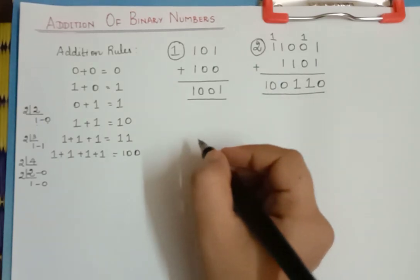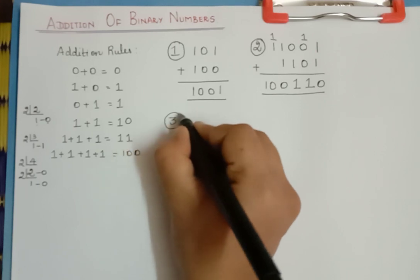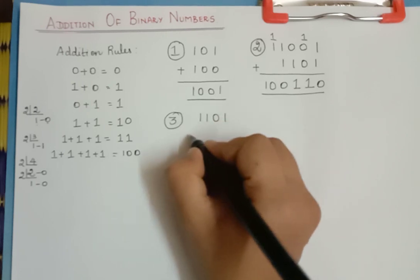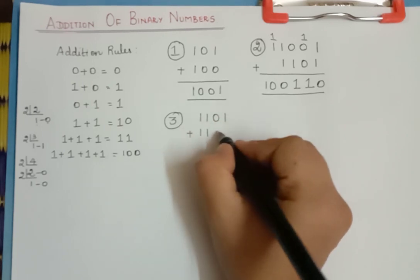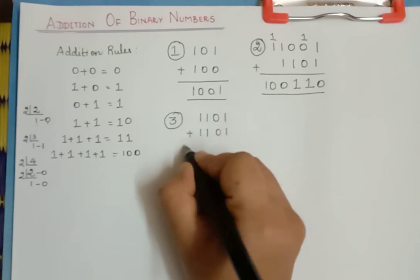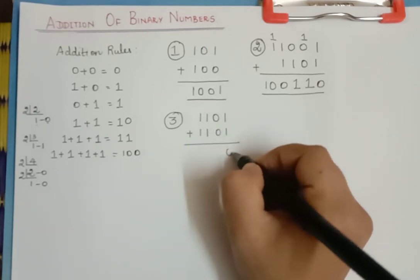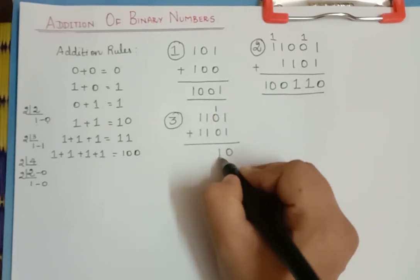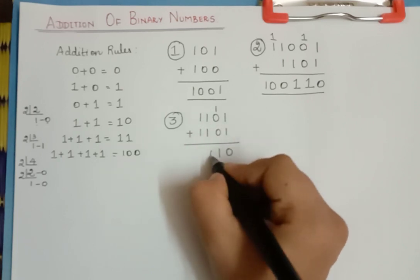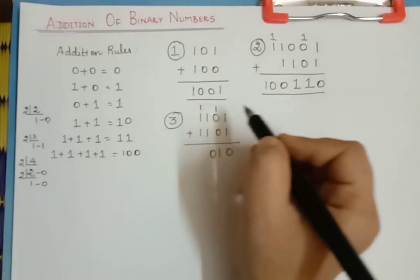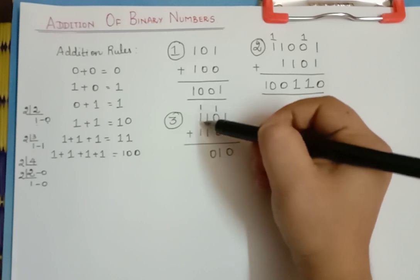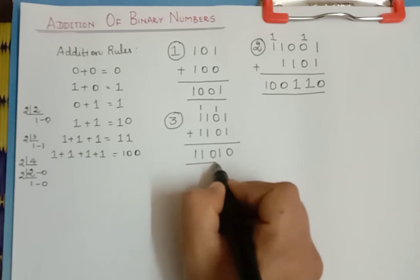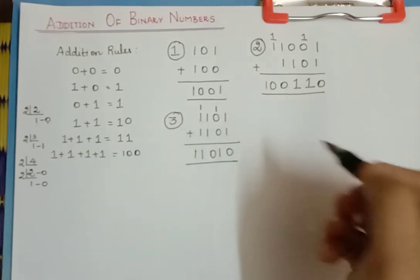Let us do addition of some more problems. The third problem is: let us add 1101 and 1101. Both numbers are the same. When we add 1 and 1, we get 0 with a carry over of 1. Then 1 plus 0 is 1 only. Then 1 plus 1 is 0 with a carry over of 1. Here we have 1 plus 1 plus 1, and so that is 11. This is the answer for these binary numbers.